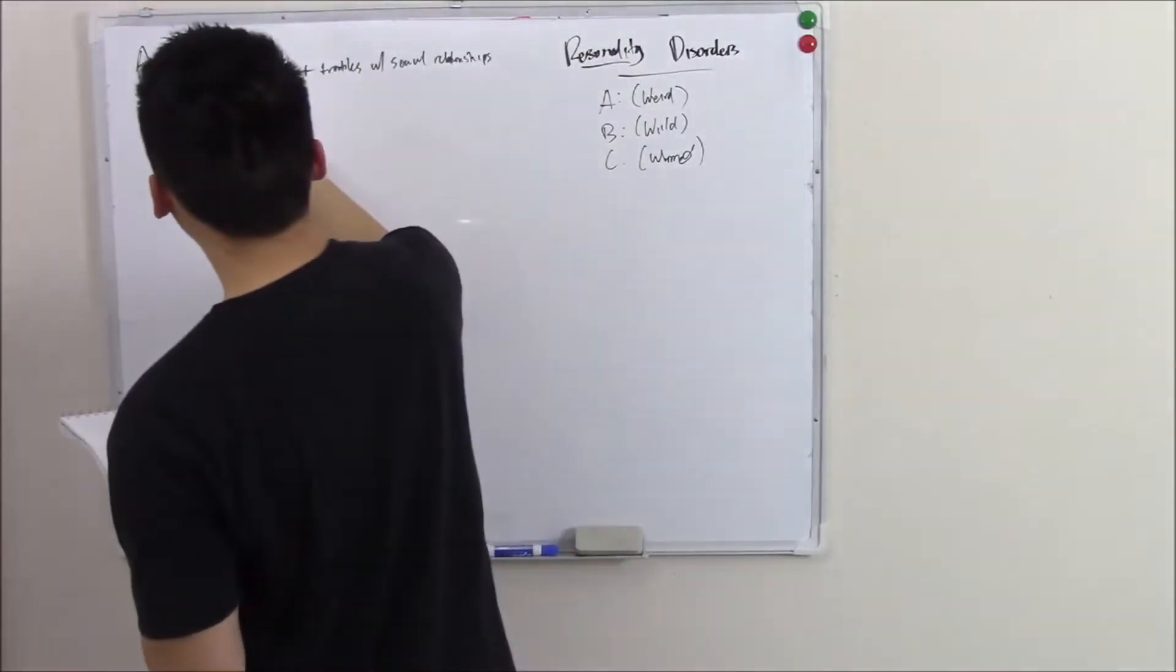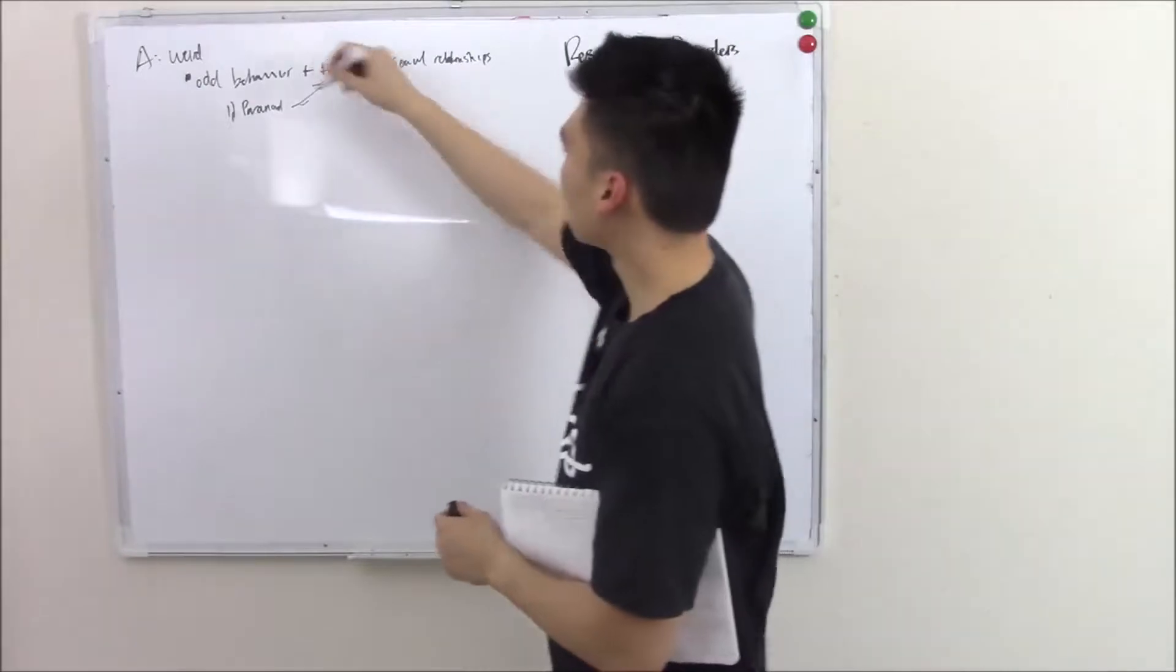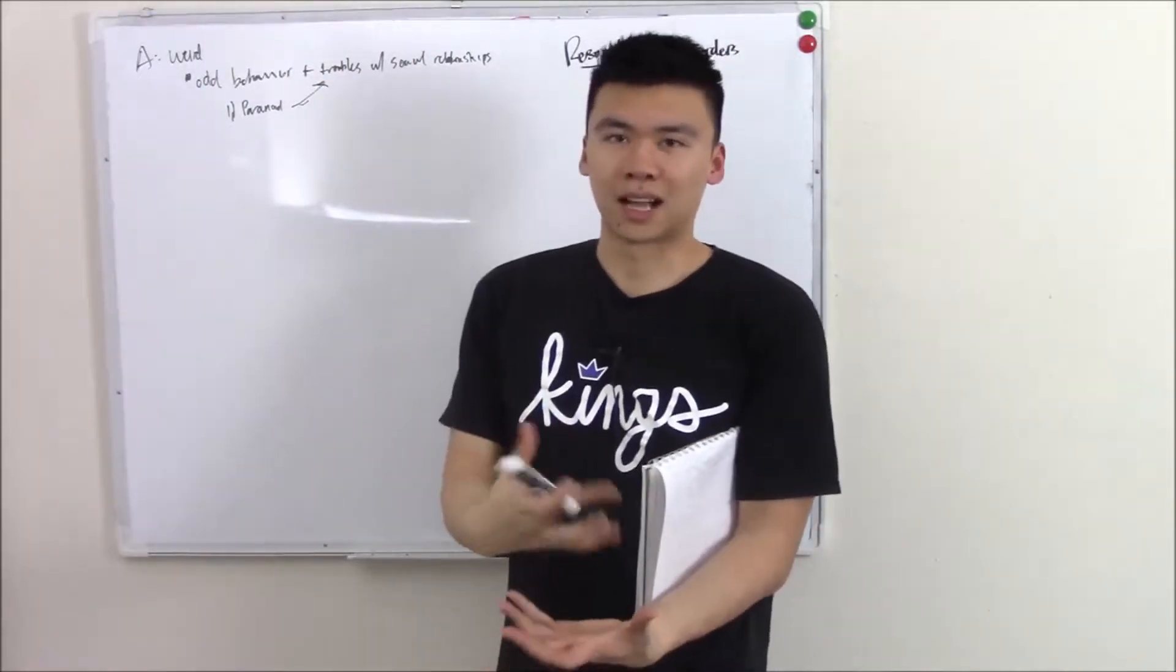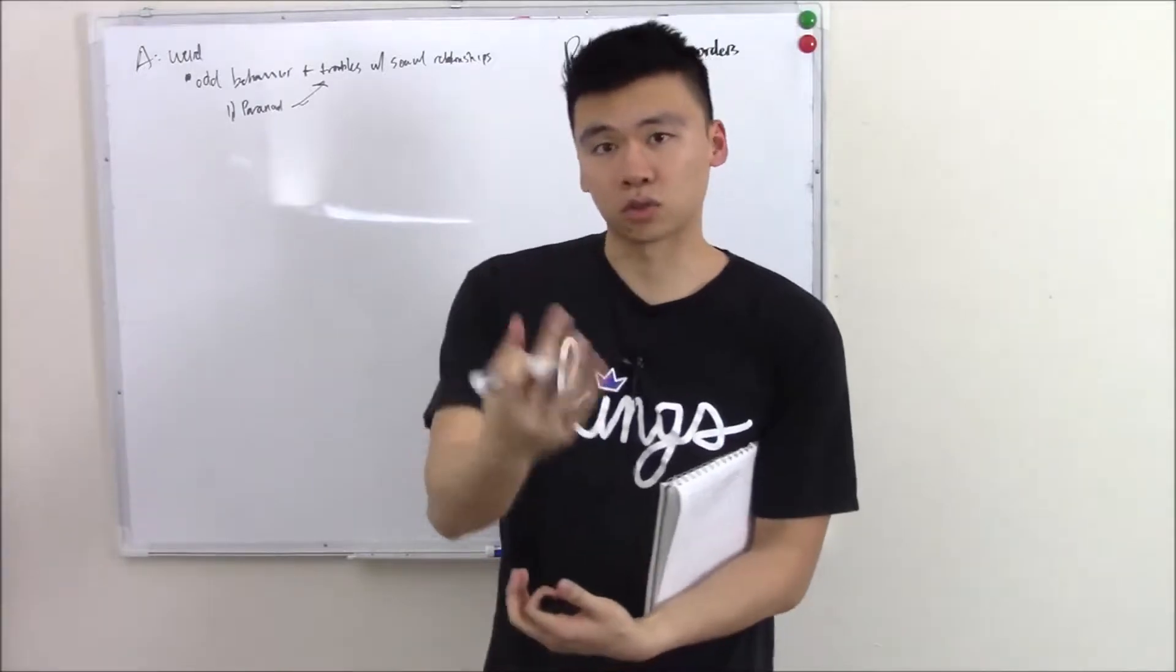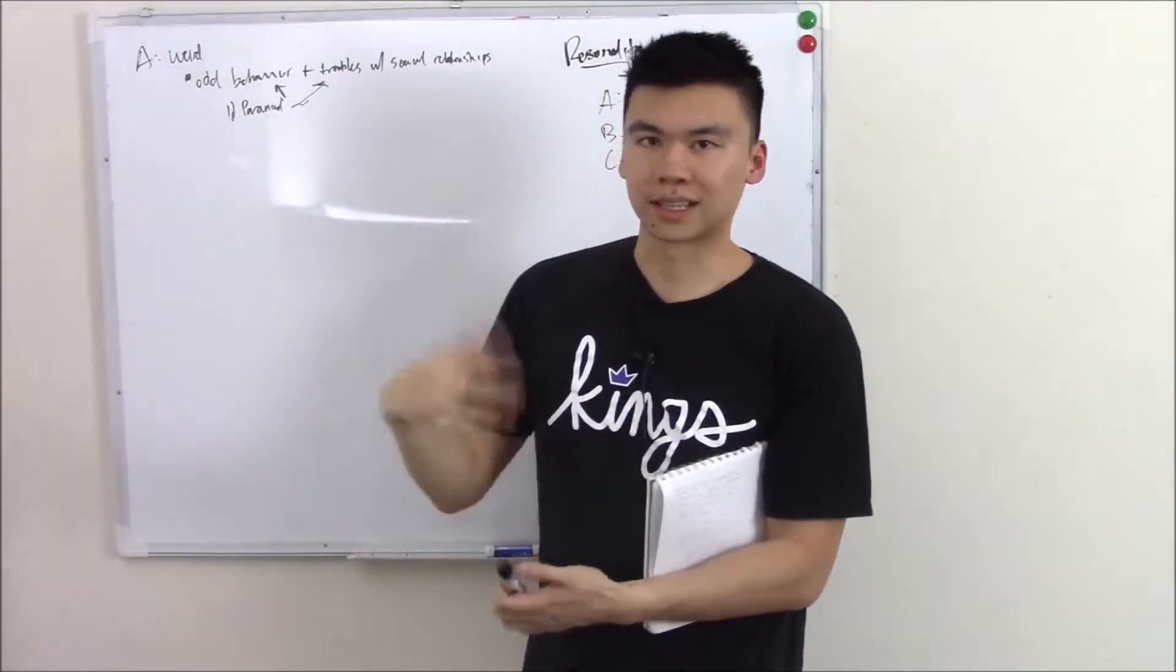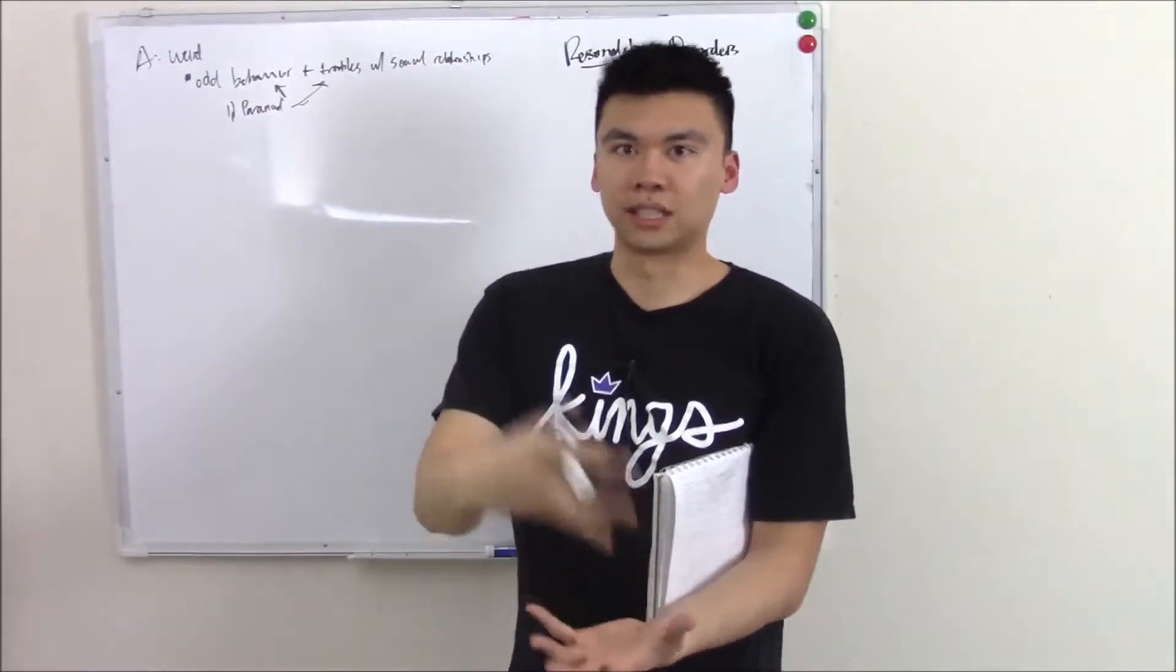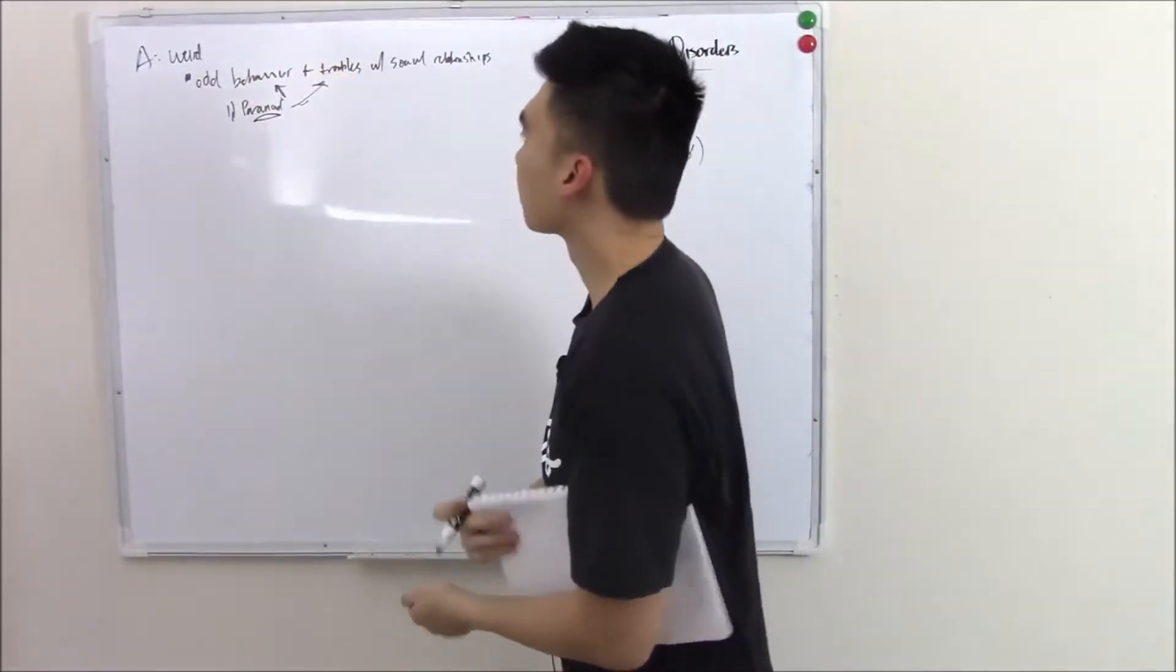These are things like paranoid personality. These are persons that don't trust people. That's the troubles with social relationship part. They might see a new guy at work and think he's not to be trusted. So they might exhibit odd behaviors, odd social behaviors. Very important though, paranoid people don't exhibit things like psychosis or hallucinations. They don't think they're some undercover secret agent or alien. They just don't trust them.